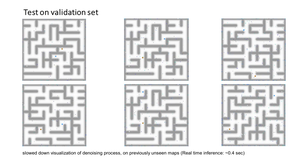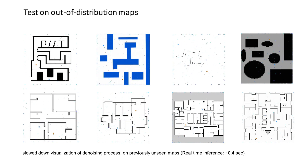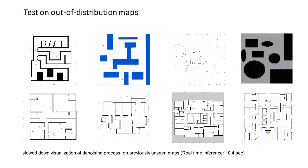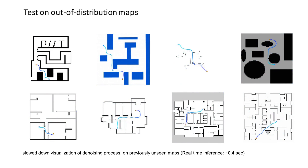The trained Diffusion Planner has demonstrated the ability to generalize to trajectories of varying lengths. Furthermore, the planner has demonstrated good performance on maps that are out of distribution, characterized by varying shapes and colors. The diffusion planning time is constant regardless of the trajectory length, allowing it to outperform other methods in more complex environments.